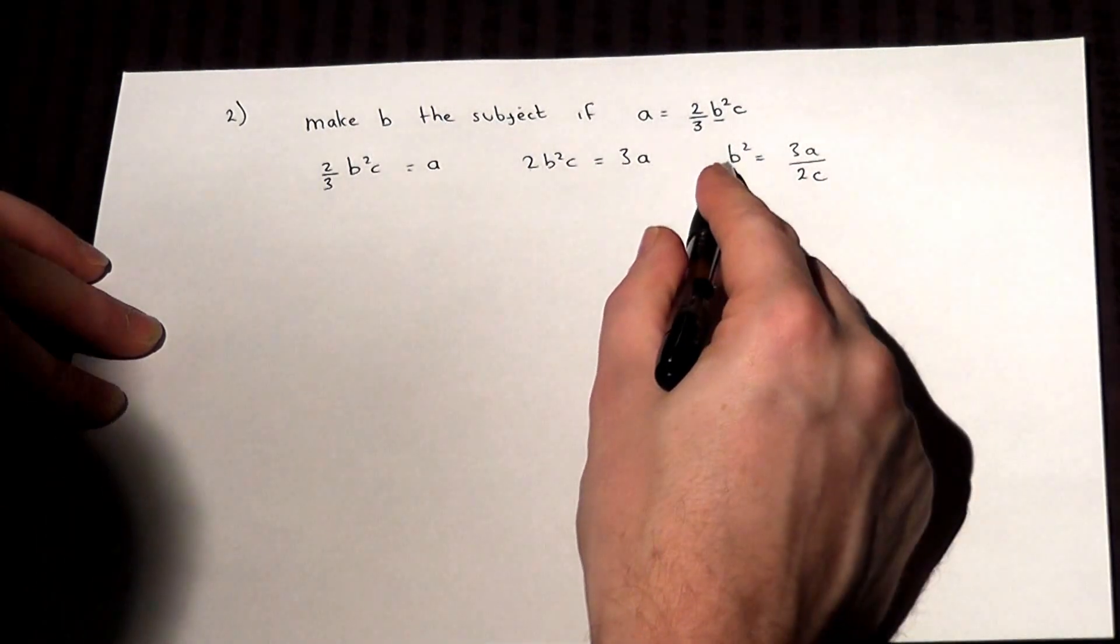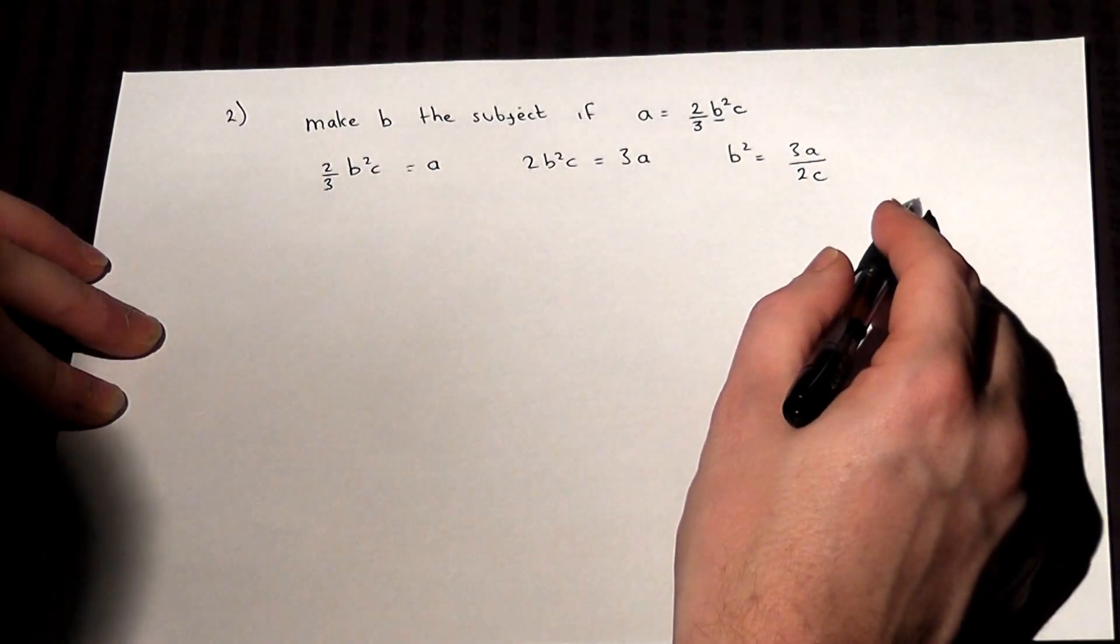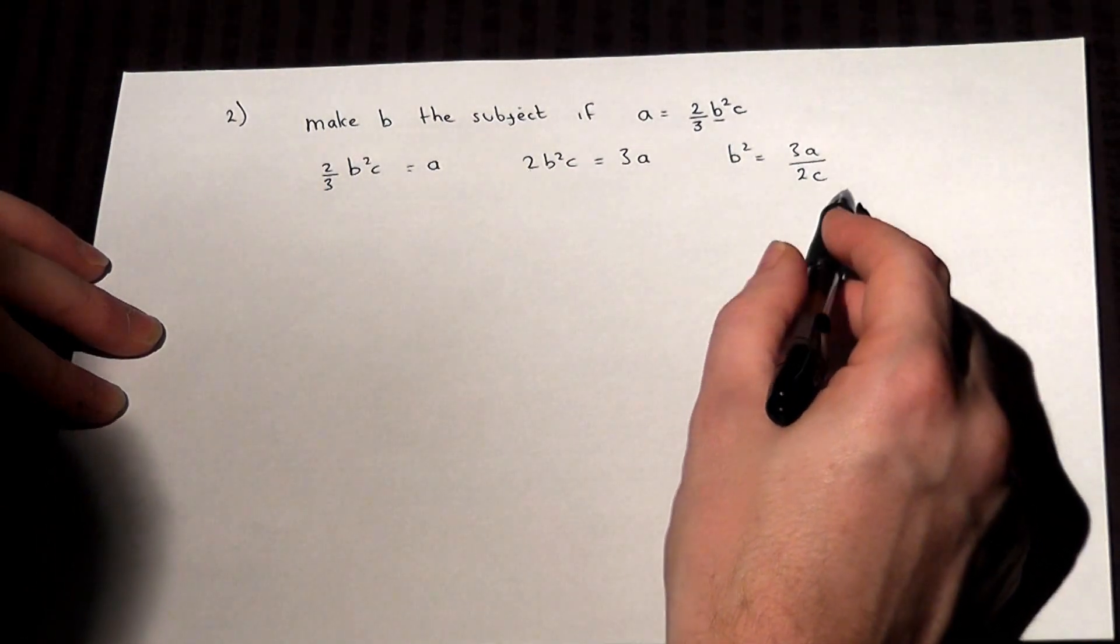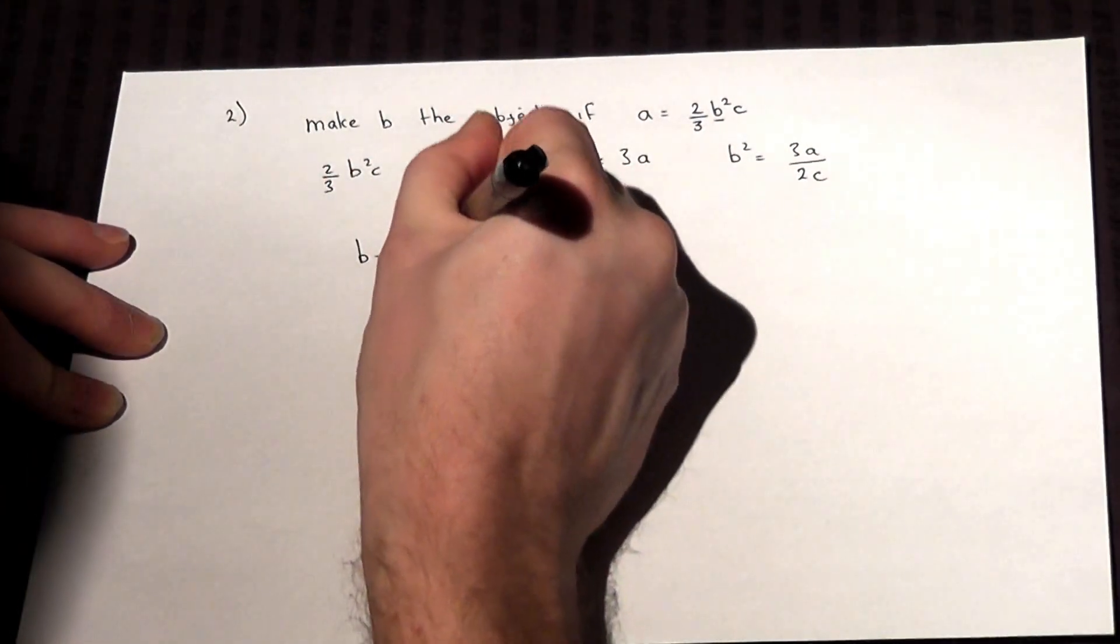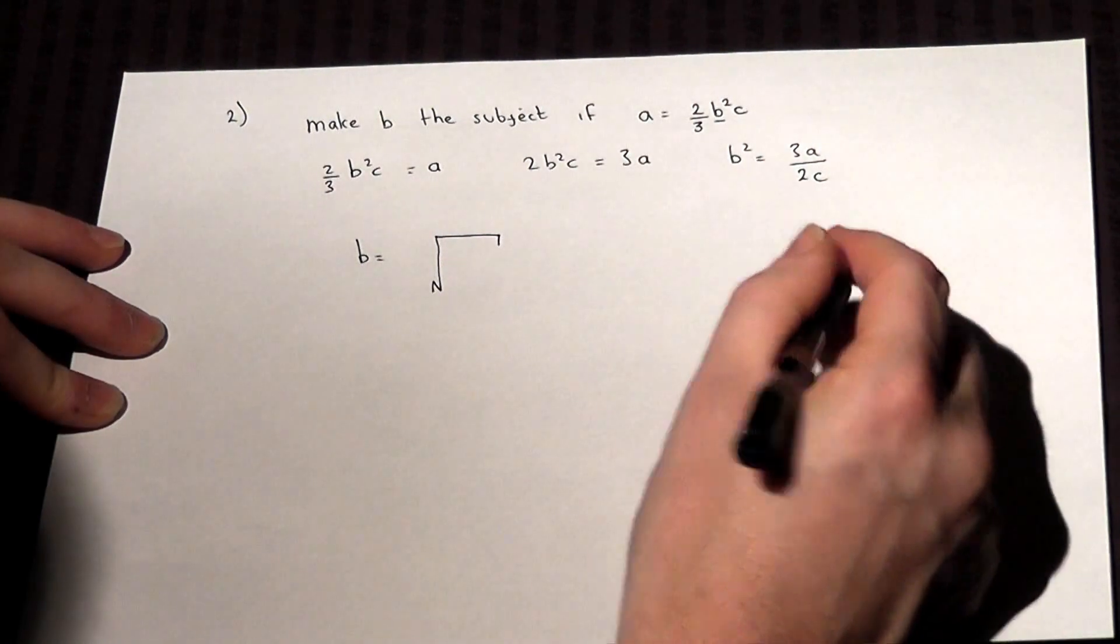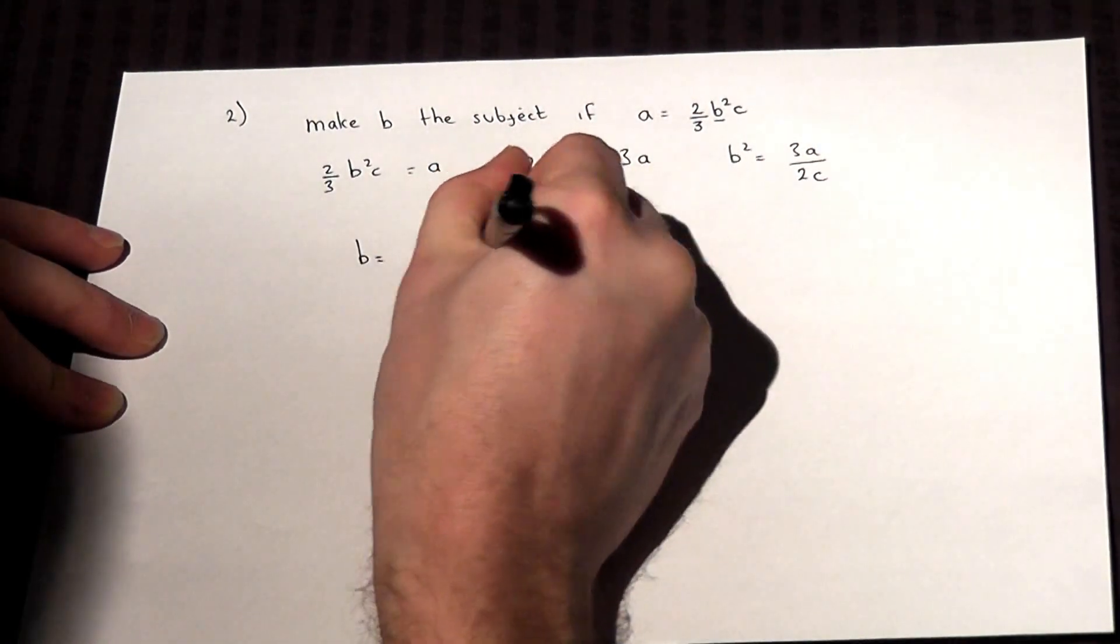So I've now got B squared equals, but I want B equals. So the final step is to do the square root. So B will equal the square root of that entire right hand side. So 3A over 2C.